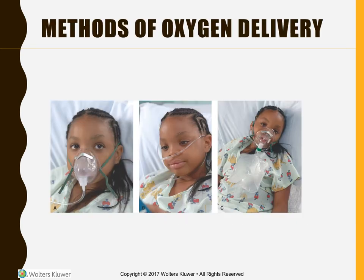Methods of oxygen delivery: a simple face mask provides about 40% oxygen with no bag reservoir and a flow rate of about 6 to 10 liters. A nasal cannula provides an additional 4% oxygen per one liter, and we usually go up to about four liters in our pediatric population. Non-rebreathers or partial non-rebreathers provide about 80 to 100% oxygen with a flow rate of 10 to 15 liters.